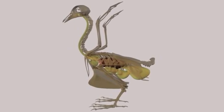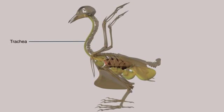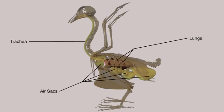The avian respiratory system is composed of the trachea, relatively small lungs, and usually nine large air sacs.